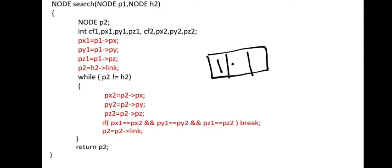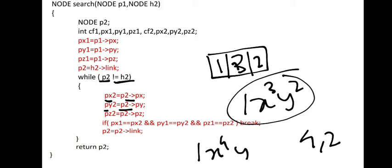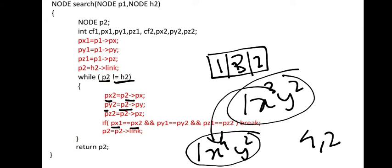Search: suppose there is a node like 1, 3, 2 representing 1x³y². To search, the initial condition is p2 not equal to h2. We check if px1 equals px2 and py1 equals py2 and so on — if all powers match, the element is found. For example, searching for power 4, 2 would check if px equals 4 and py equals 2; since 3 ≠ 4, it won't match.